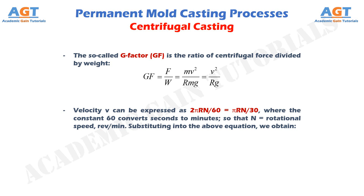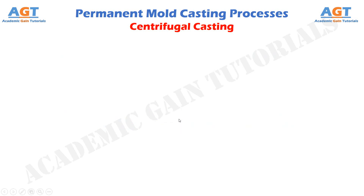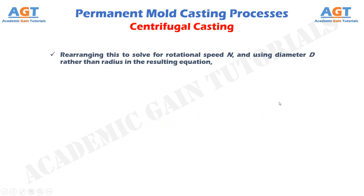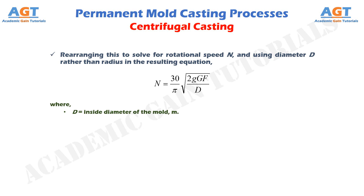Substituting into the above equation, we obtain GF equals (πN/30)² times R divided by g. Rearranging this to solve for rotational speed N, and using diameter D rather than radius in the resulting equation: N equals 30 divided by π, multiplied by the square root of 2g·GF divided by D, where D represents the inside diameter of the mold in meters.